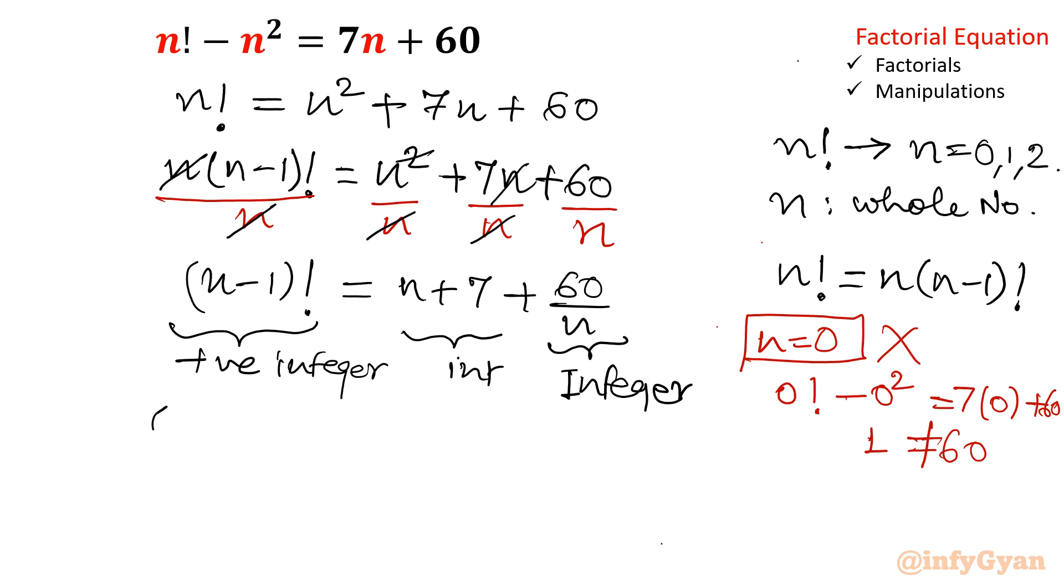So 60 over n, 60 divided by n or n divide 60. So then we have to find out the factors of n, means how we can consider the value of n so that it should come out integer value.